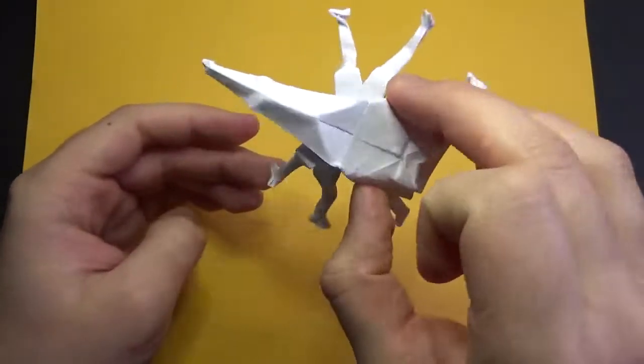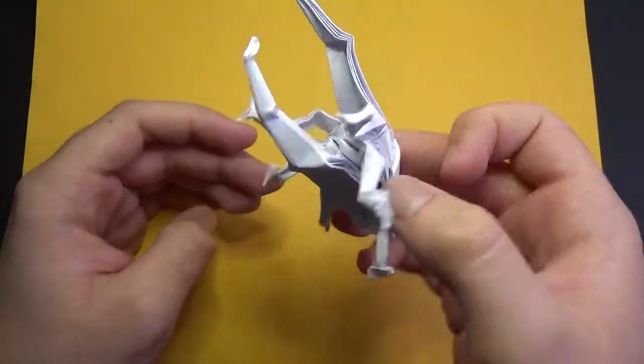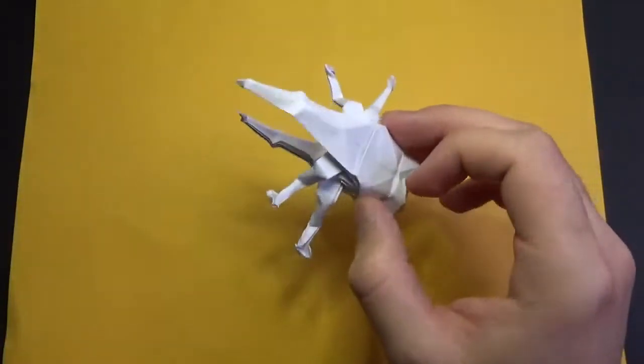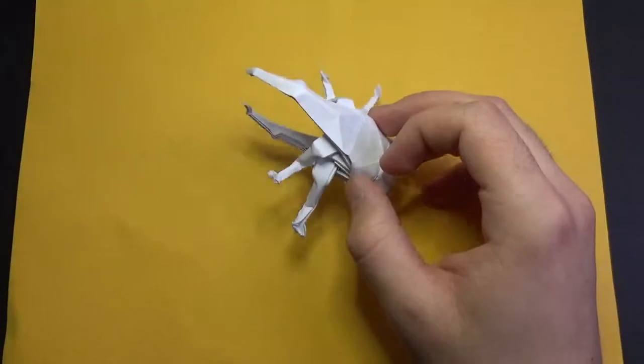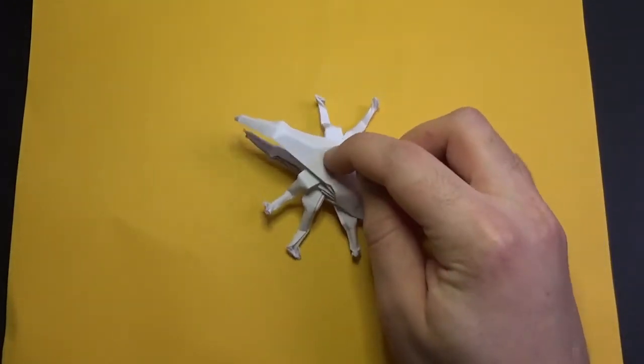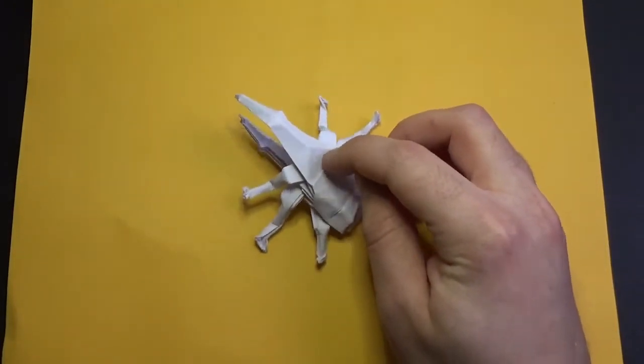I folded this model from a sheet of printer paper cut square, and as you can see, it came out really nice. The really cool thing about it is that if you just put it on the table like this and press it, his bottom pincher goes up.